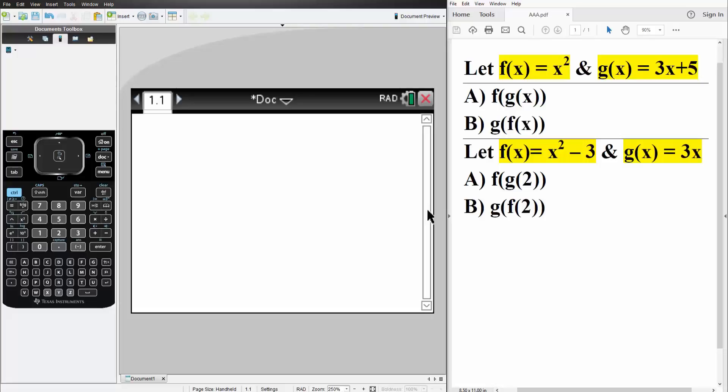In this video, we will solve composite functions using the TI-inspire. So for this first problem, we're saying let f of x is equal to x squared and g of x is equal to 3x plus 5. And what we want to find is f parentheses gx and g parentheses fx for the first problem.